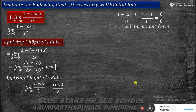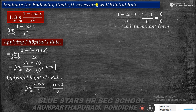We now discuss Exercise 7.5. The first problem is: evaluate the limit as x tends to 0 of (1 minus cos x) divided by x squared. The exercise asks us to evaluate the following limits, using L'Hôpital's rule if necessary. So the first problem is: limit x tends to 0, (1 minus cos x) by x squared.